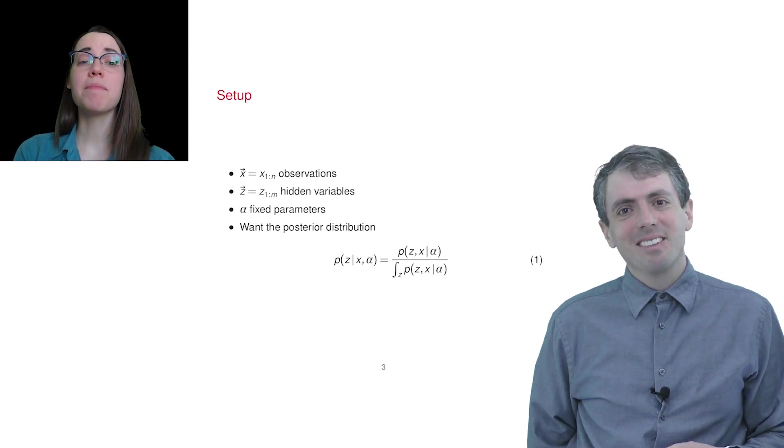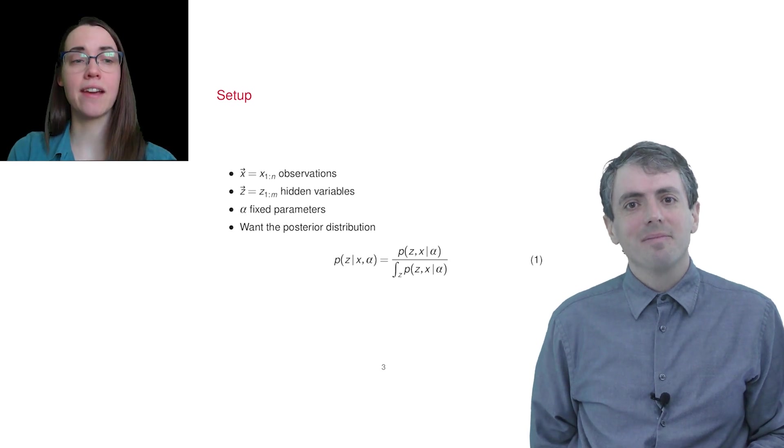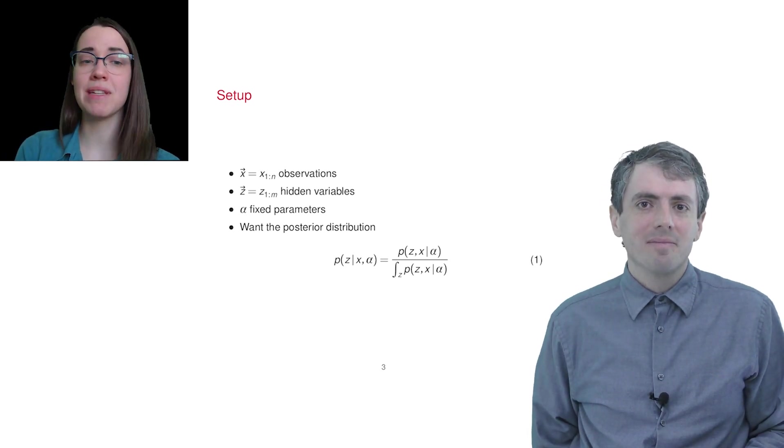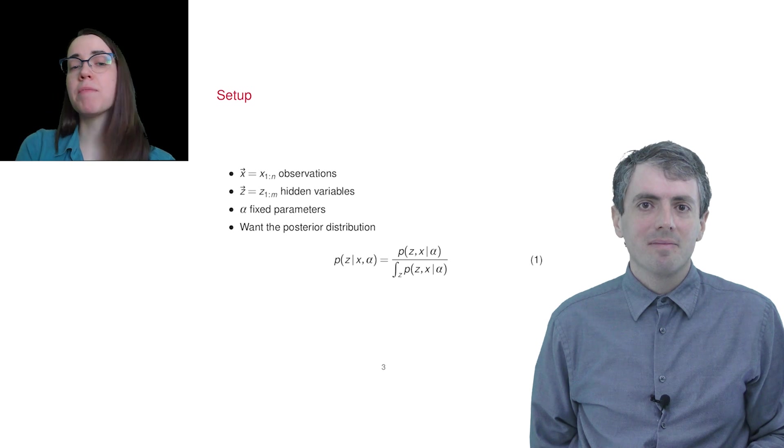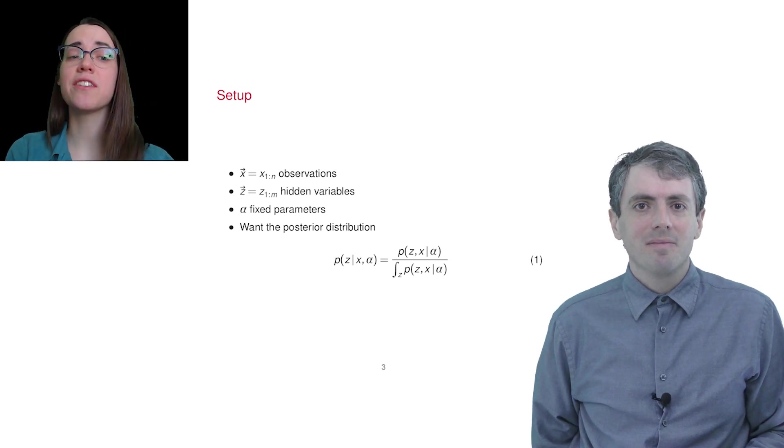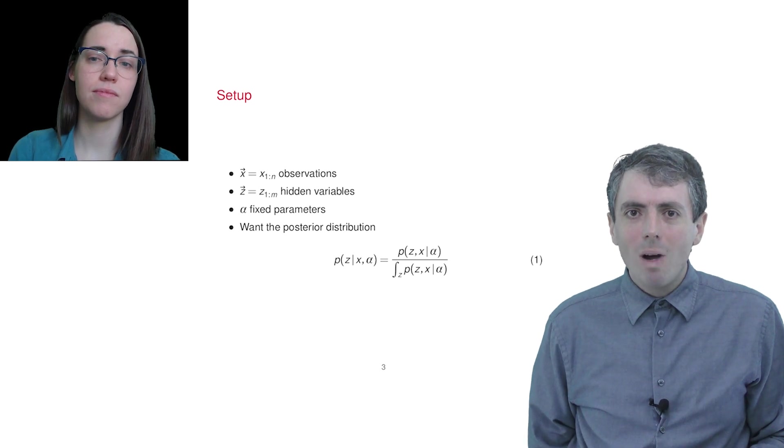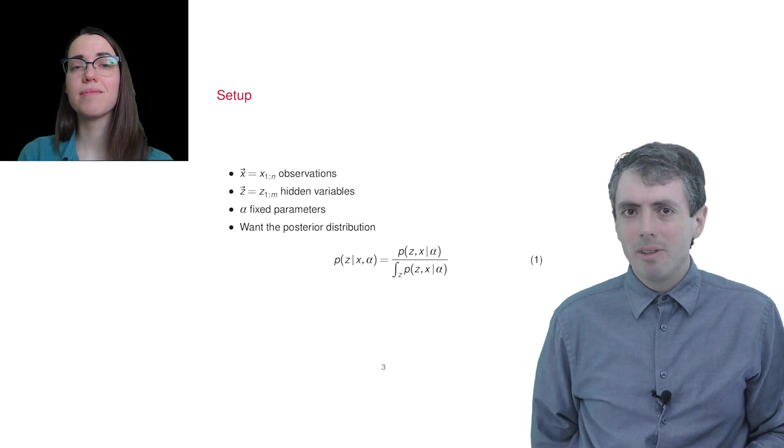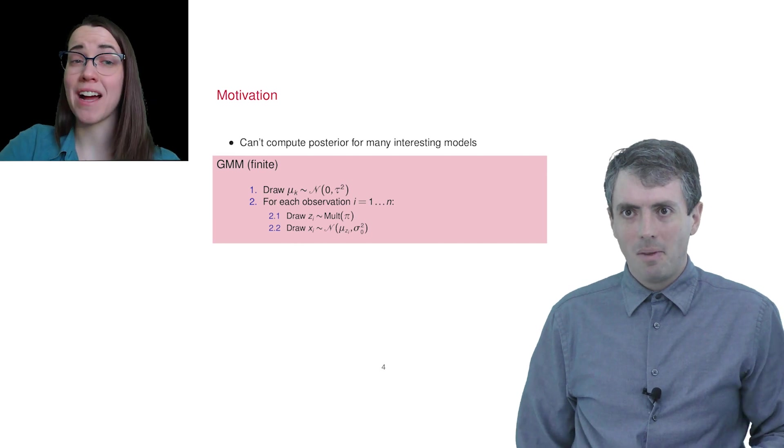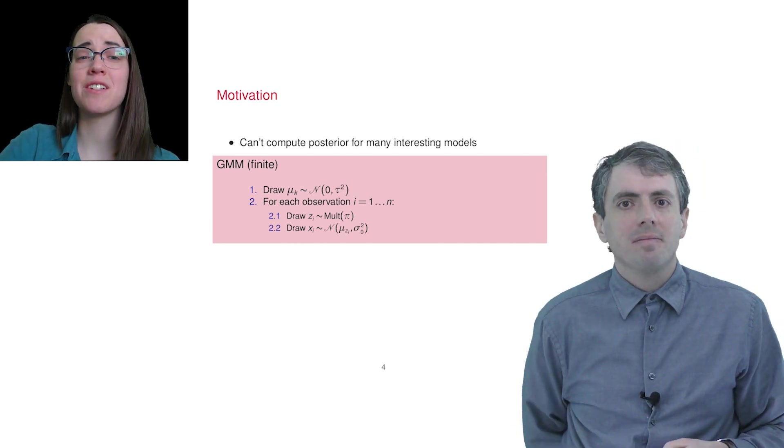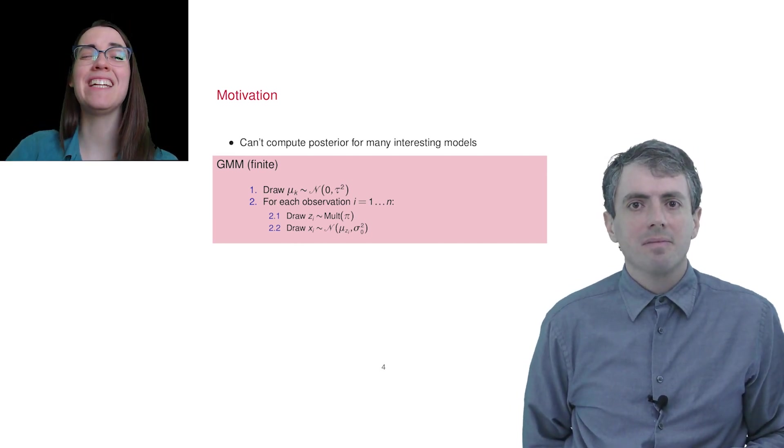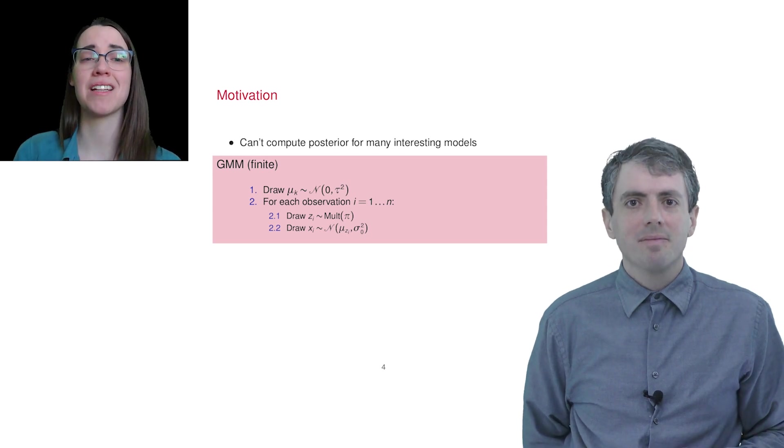So the setup is you have observations, which are words x, hidden variables or topic assignment z, some hyperparameters alpha, and you want the posterior distribution over the hidden variables. But can't you just write down the posterior distribution with some algebra? In many cases, this is intractable. Specifically, there's usually a denominator that requires integrating over an inconveniently huge number of possible outcomes.